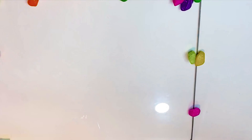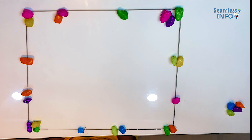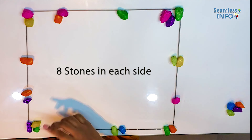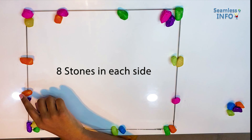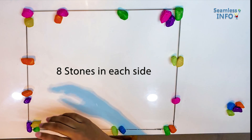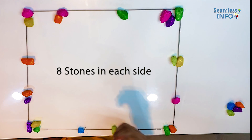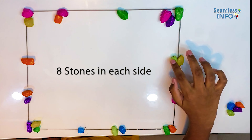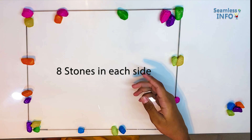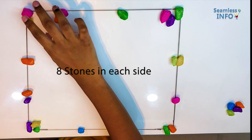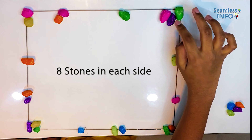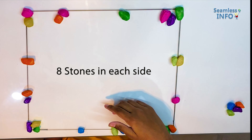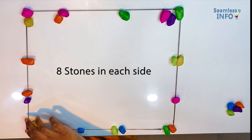So, let's move on to the video. Now we start up with 8 stones in each side. On my left side we have 8 stones: 1, 2, 3, 4, 5, 6, 7, 8. On the right side we have 8 stones: 1, 2, 3, 4, 5, 6, 7, 8. On the top side we have 8 stones: 1, 2, 3, 4, 5, 6, 7, 8. And on the bottom side we have 8 stones: 1, 2, 3, 4, 5, 6, 7, 8.